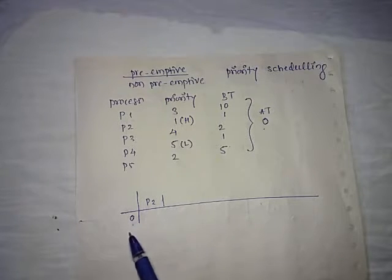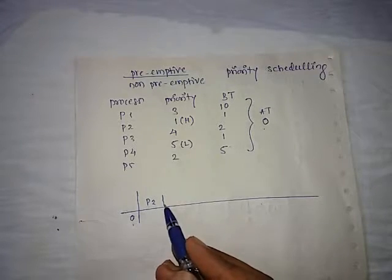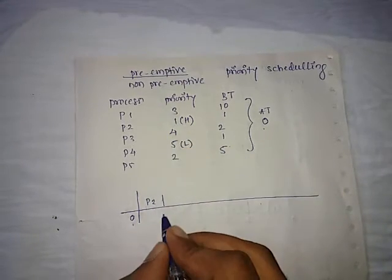We schedule P2 first because it has the highest priority, and its burst time is 1. So at time 1, P2 completes and leaves the system. The next highest priority